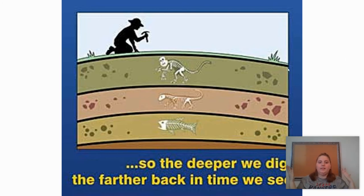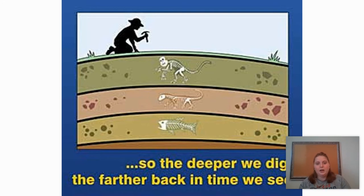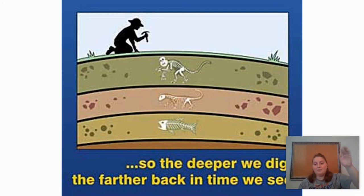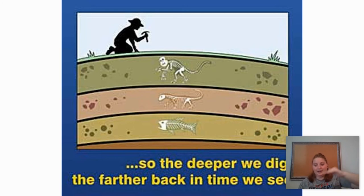By looking at this picture, let's say I'm out in the field looking for fossils and I come across this in the real world. I would say that fish evolved first because they're on the bottom layer, followed by dinosaurs because they're in the middle layer that comes next, and then monkeys evolved after that because they're at the very top.